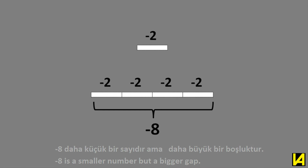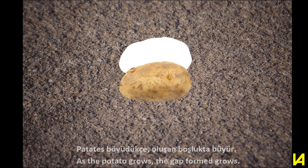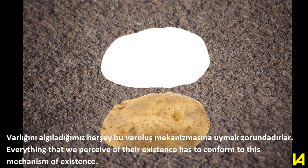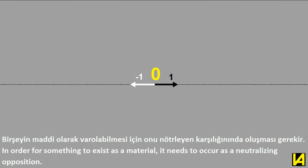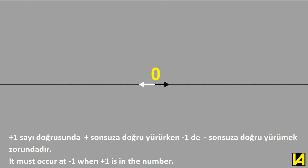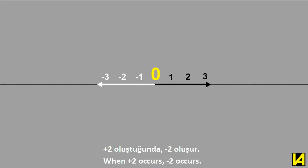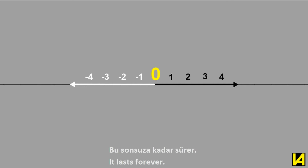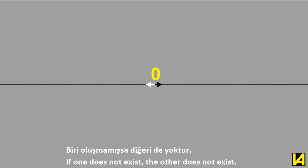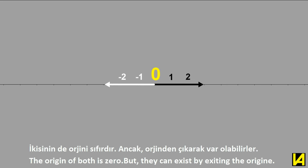Just like growing potatoes — as the potato grows, the gap it forms also grows. Everything that we perceive of their existence has to conform to this mechanism of existence. In order for something to exist as a material, it needs to occur as a neutralizing opposition. Everything is a neutralization point; the starting point is zero. When plus 1 occurs, negative 1 must also occur; when plus 2 occurs, negative 2 occurs. They depend on each other — if one does not exist, the other does not exist.